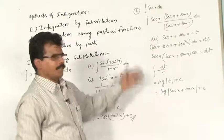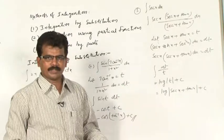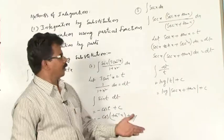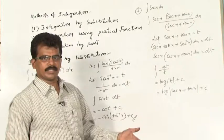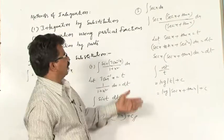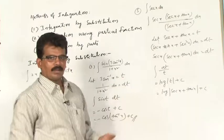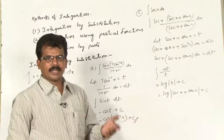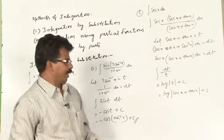Similarly, we can derive integral of cosec(x) as log|cosec(x) − cot(x)|, and we can also derive integral of tan(x) and integral of cosec(x).